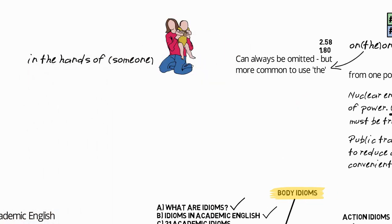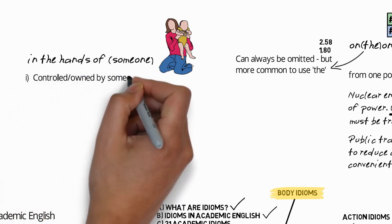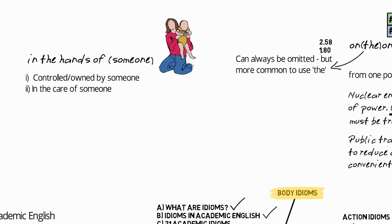For the idiom on the other hand, the word hand can be omitted only when this idiom is combined with on the one hand, and it's actually quite common to omit this word. So in the first example, we could say nuclear energy on one hand can provide huge amounts of power. On the other, it produces toxic waste which must be treated very carefully.